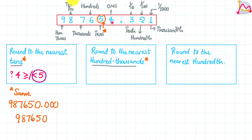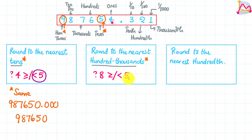Our target digit for the hundred thousands place is nine. We are then going to ask the digit immediately after the hundred thousands — which is the ten thousands digit, eight — are you greater than or equal to five, or are you less than five? If greater than or equal to five, we add one to our nine. Since eight is indeed greater than five, our nine becomes nine plus one.